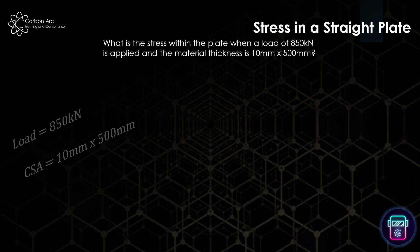So what we can do is first write down the information we have. We know we've got a load of 850 kilonewtons and we have a cross-sectional area of 10 millimeters times 500 millimeters.